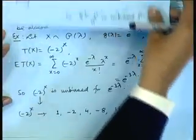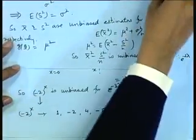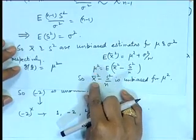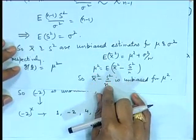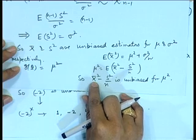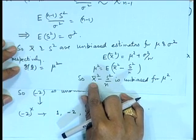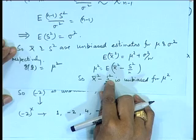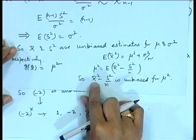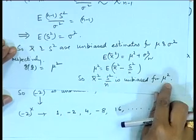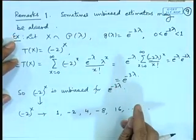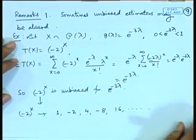Look at another situation. For μ², I gave an estimate x̄² − s²/n. But there may be a situation where x̄ is close to 0 and s² is a little larger, in which case the estimate becomes negative — whereas μ² is always positive. So this may again give an absurd estimator.